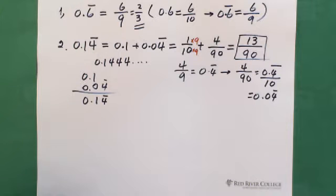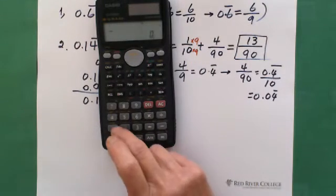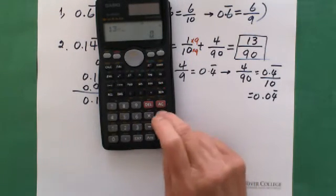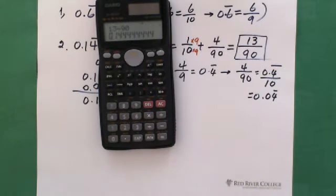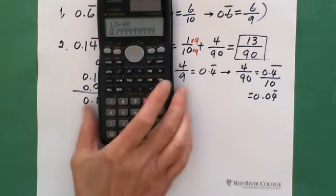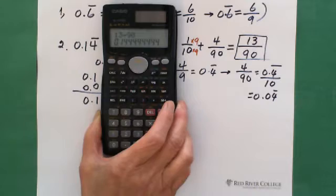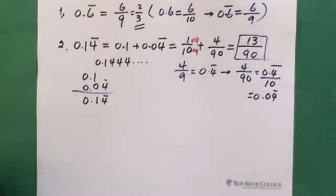We can verify: 13 divided by 90 equals 0.14444..., which is 0.14 repeating. That confirms the answer is correct.